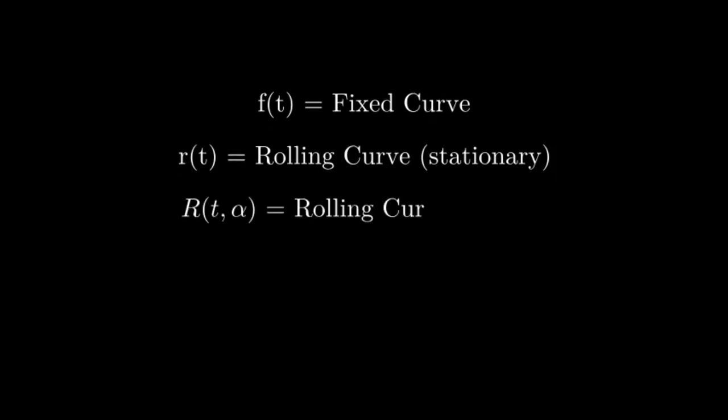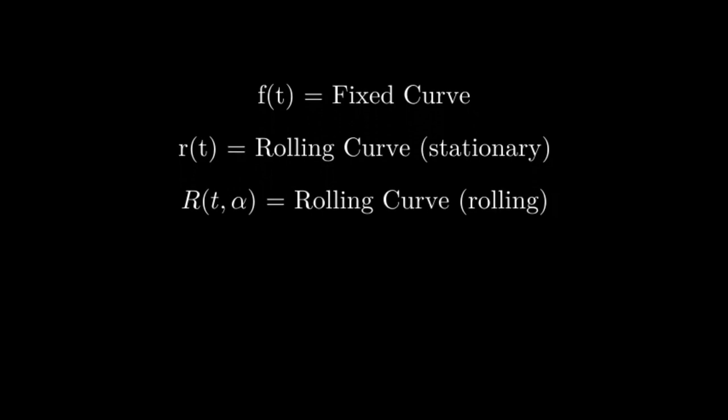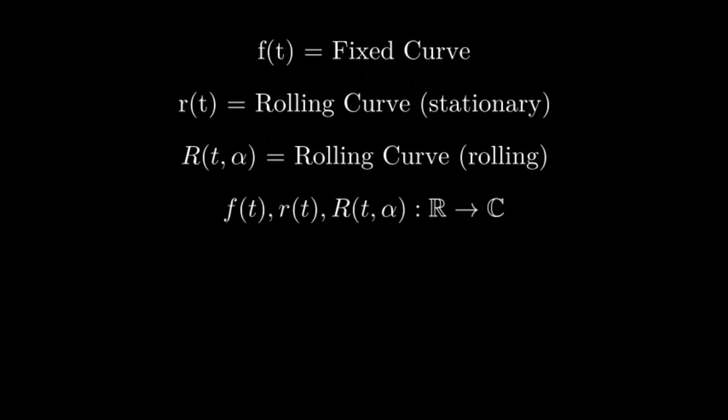In addition, let big R be the complex parametric function representing r after it has been rolled for alpha time steps. Now, what does it mean for r to roll around f?